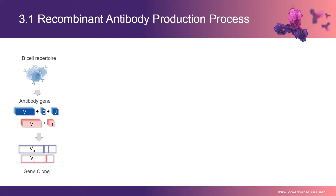If you need an scFv fragment antibody, a linker must be designed in your PCR strategy. Step 2: Transformation. Electroporate the ligation product of VH and VL received in the previous step into clone expression host cells. In this step, it is very important that highly competent cells of commercial source be used to obtain high transformation efficiency.